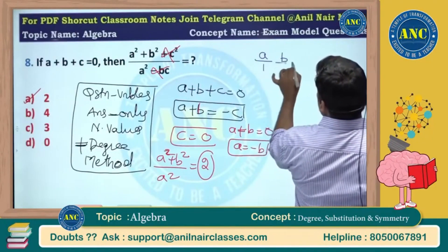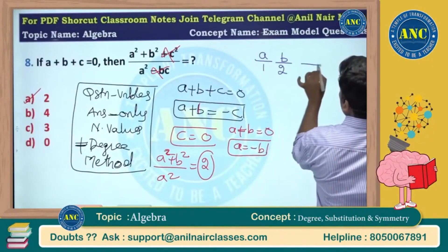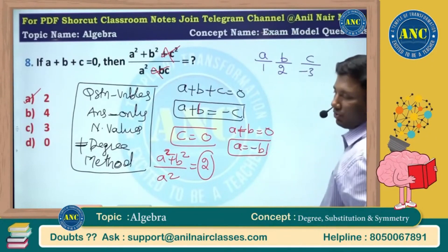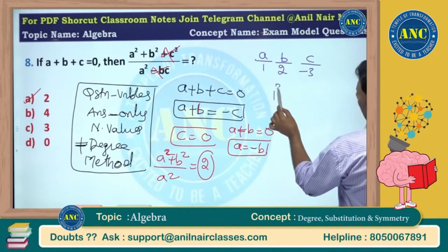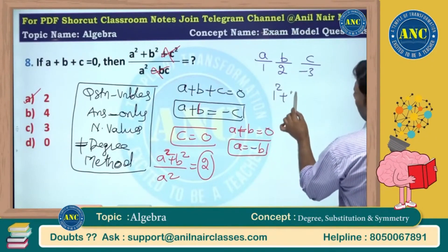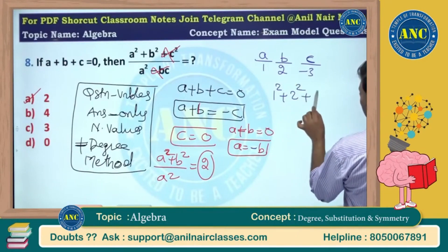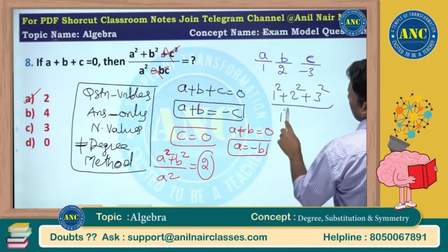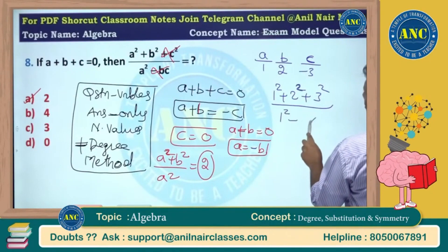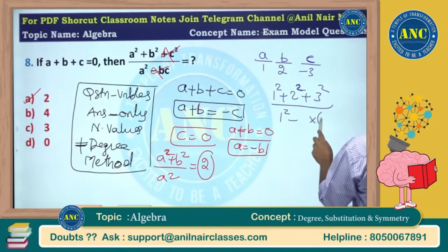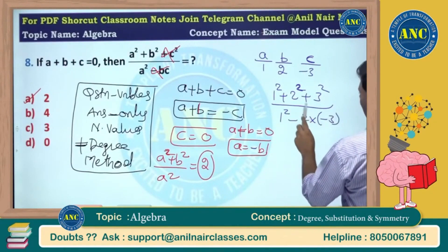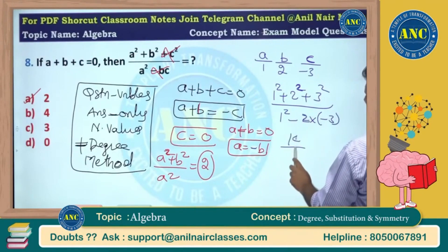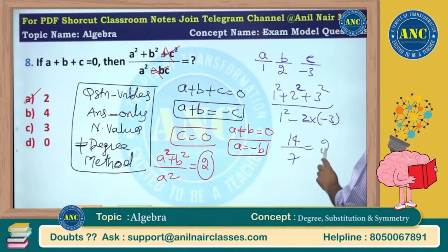Alternatively, substitute a equals 1, b equals 2, c equals minus 3. The expression becomes 1² plus 2² plus 3² divided by 1² minus 2 times minus 3, which gives 14 divided by 7, and the answer is 2.